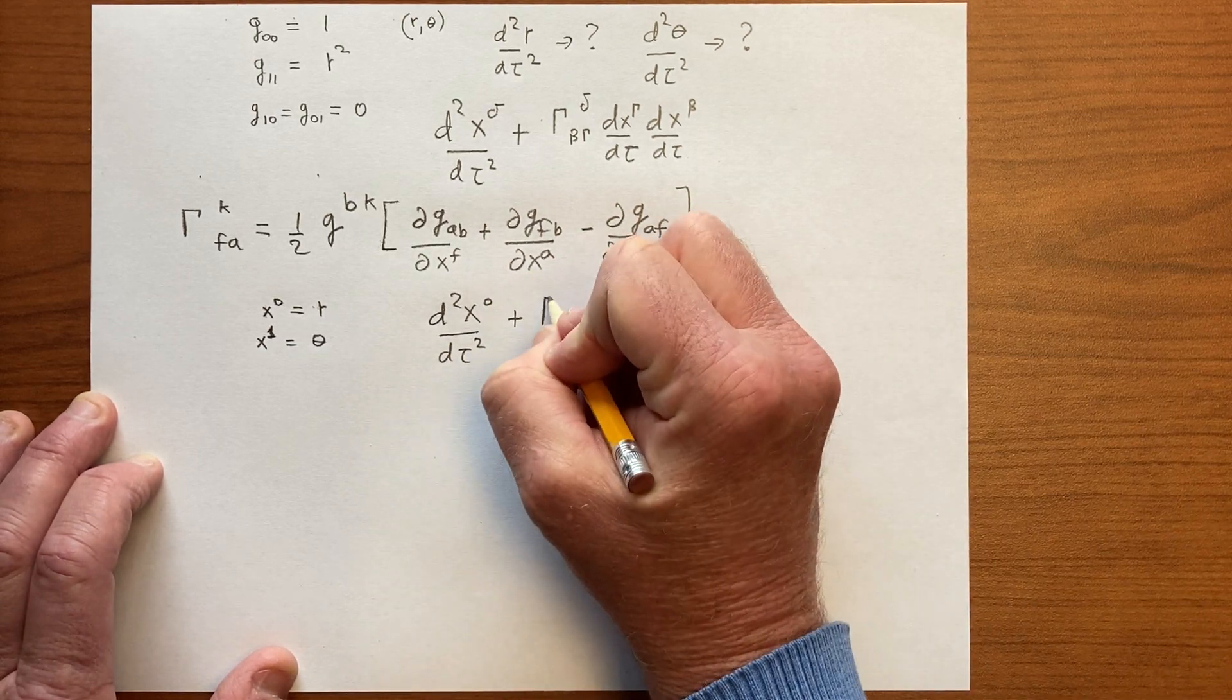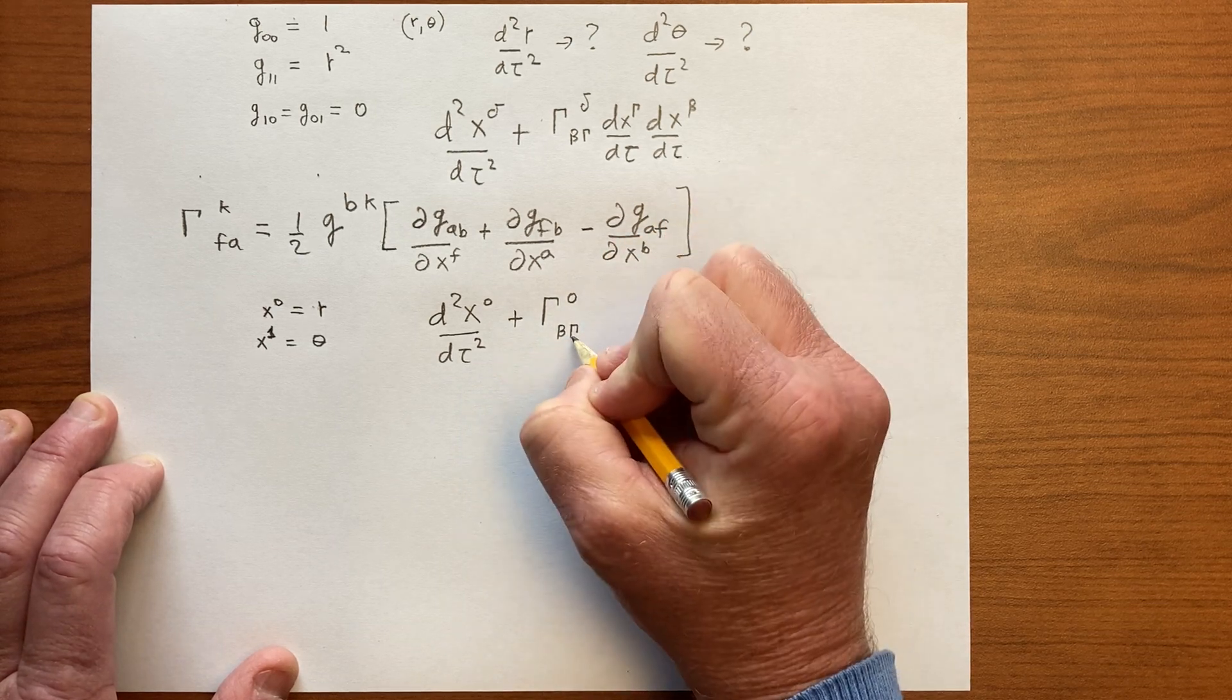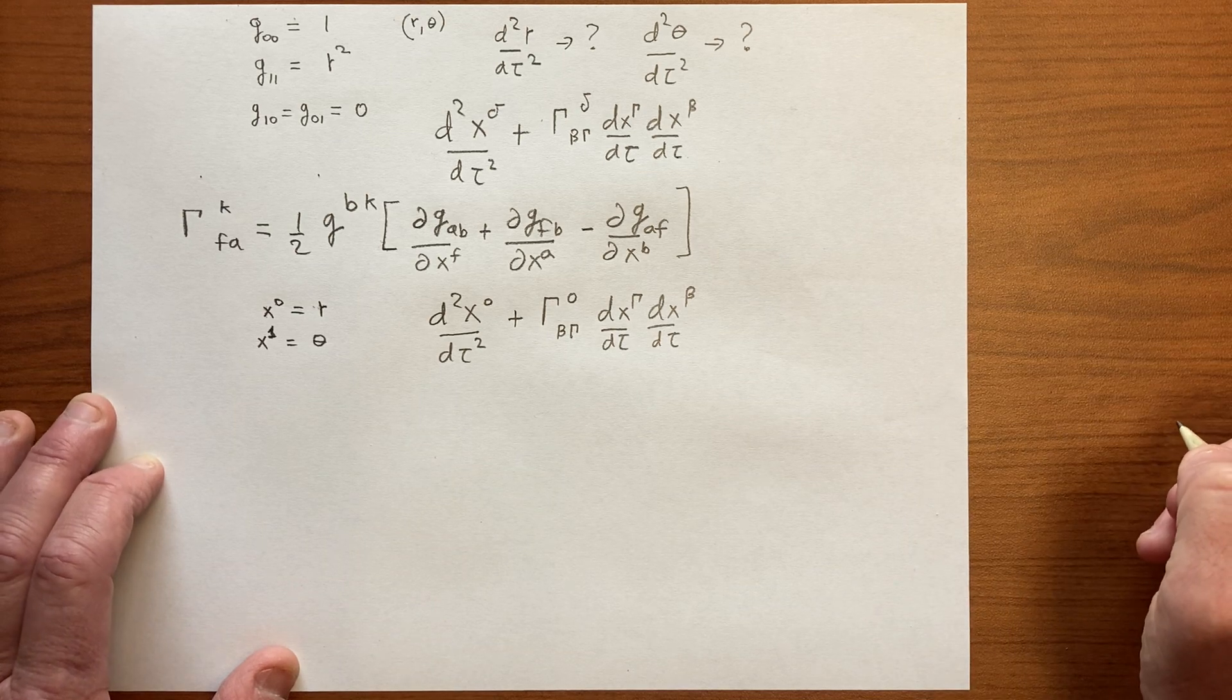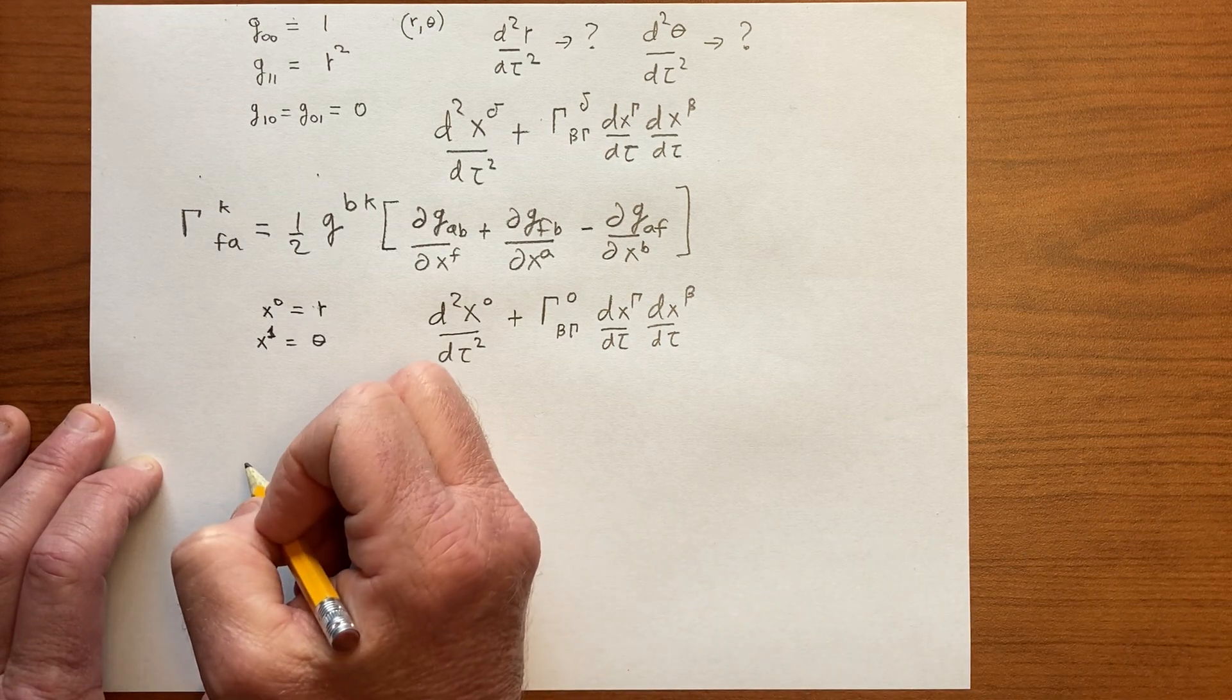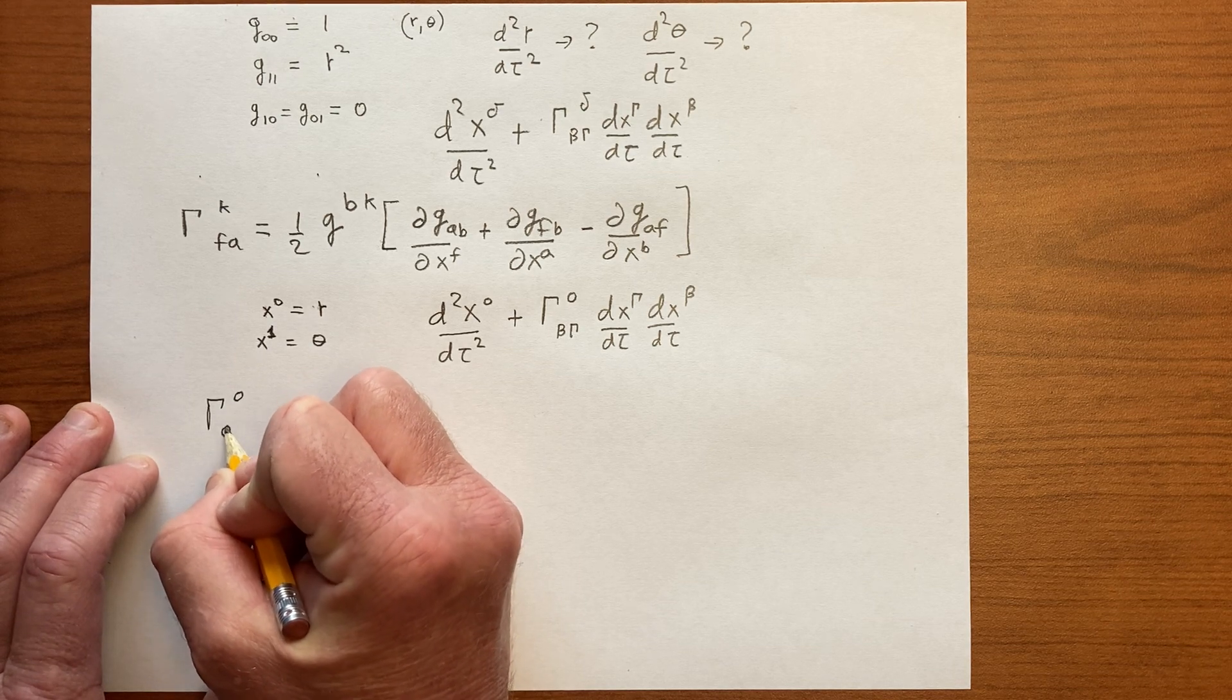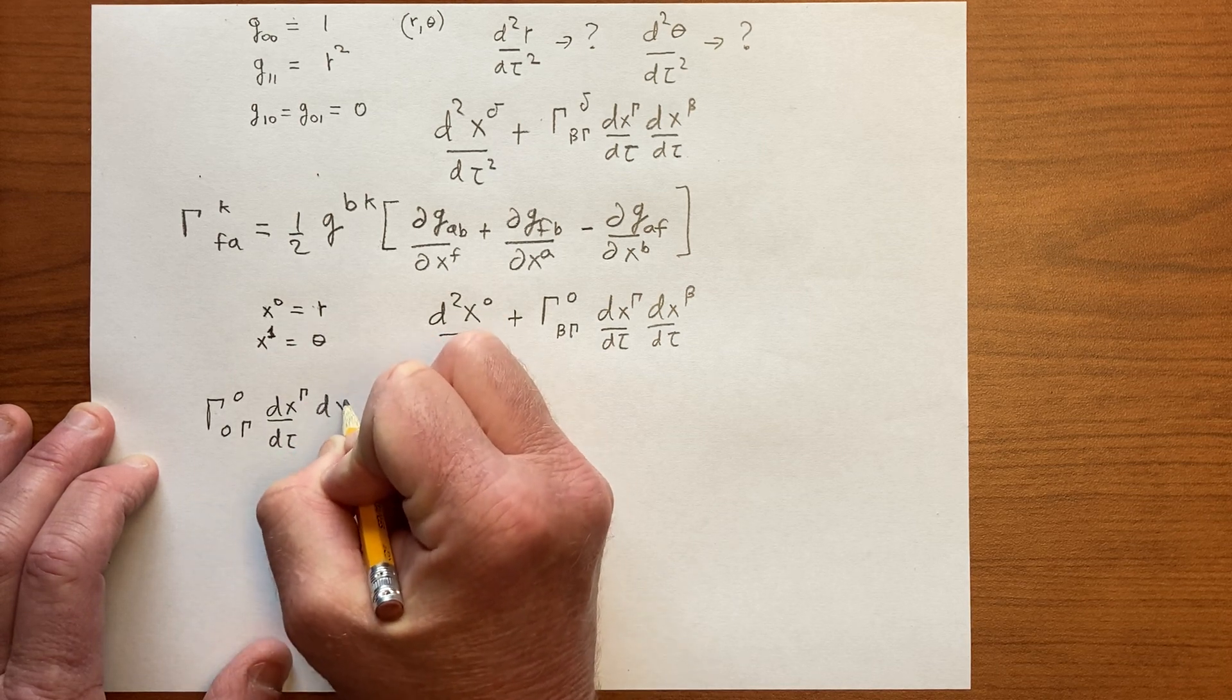So we have plus gamma. So delta is 0. So this is 0, and then we have to sum on these beta and gamma indices. And so we want to evaluate these terms, and they look like gamma.